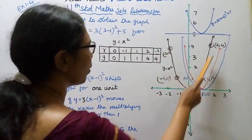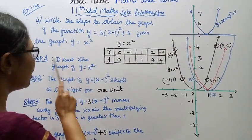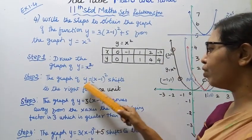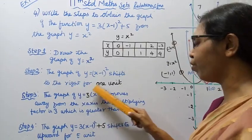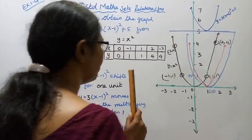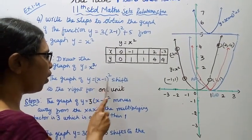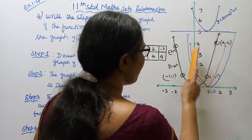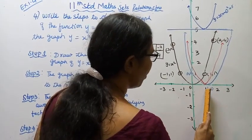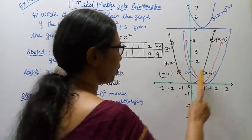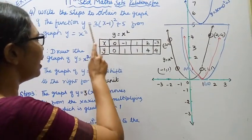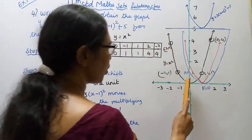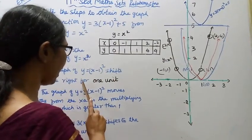Step 2: The graph of y equal to x minus 1, the whole square, shifts to the right for 1 unit. The parabola in blue color shifts to the right for 1 unit from the graph of y equal to x square, giving y equal to (x-1)².